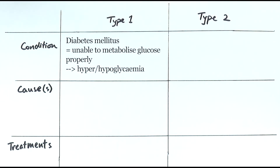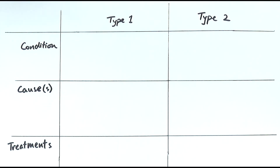People with diabetes are more likely to experience conditions called hyperglycemia or hypoglycemia. Hyperglycemia is when your blood glucose level is too high, and hypoglycemia is when your blood glucose level is too low. In either case, if left untreated, these could lead to some really serious conditions.